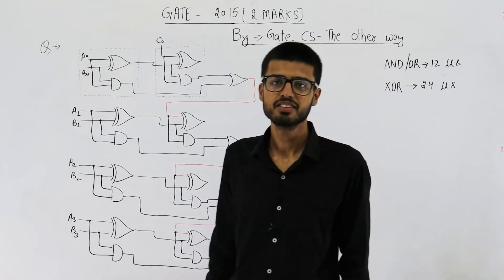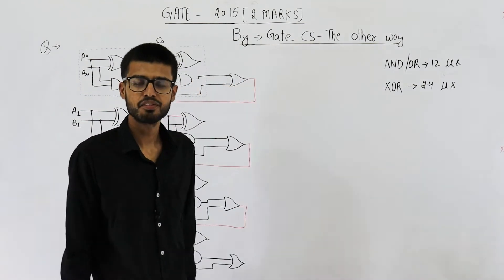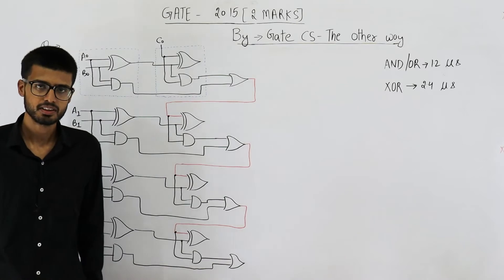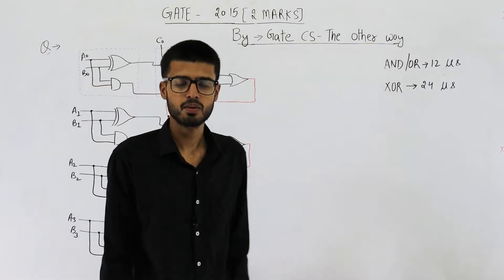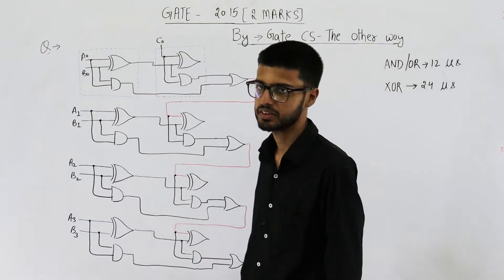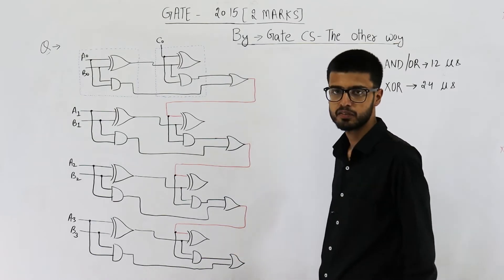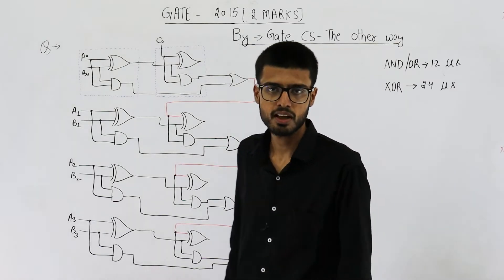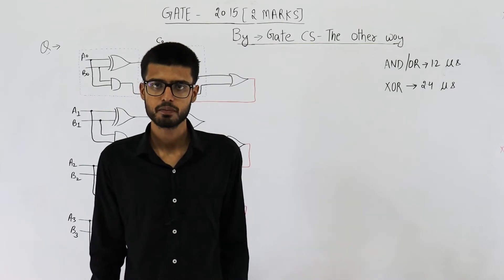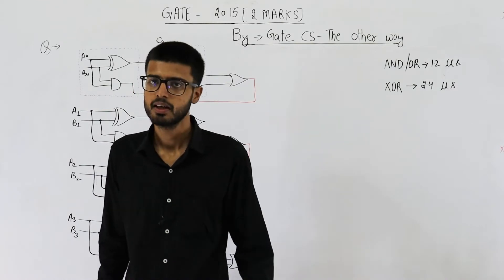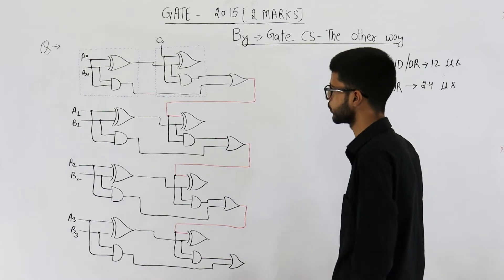Welcome back students. This question is from the GATE 2015 exam, set 2, and it is for two marks. Now there is a small confusion around the answer of this question. What I'll be teaching you is a bit different from what the official answer key says. We are going to see both approaches and you can decide which one seems more convincing to you.